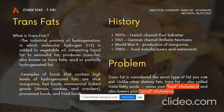Trans fat is considered the worst type of fat you can eat. Unlike other dietary fats, trans fat, also called trans fatty acids, raises your bad cholesterol and also lowers your good cholesterol. A diet laden with trans fat increases your risk of heart disease, the leading killer of adults. The more trans fat you eat, the greater the risk of heart and blood vessel disease. Trans fat is so unhealthy that the Food and Drug Administration has recently prohibited food manufacturers from adding the major source of artificial trans fat to foods and beverages. The FDA expects that this move will prevent thousands of heart attacks every year.